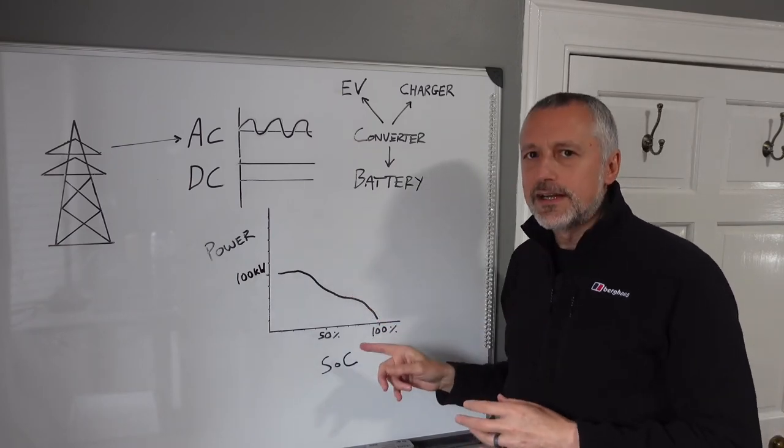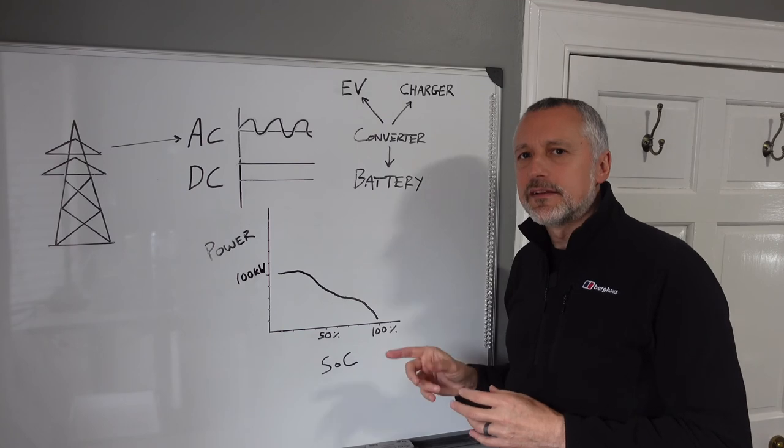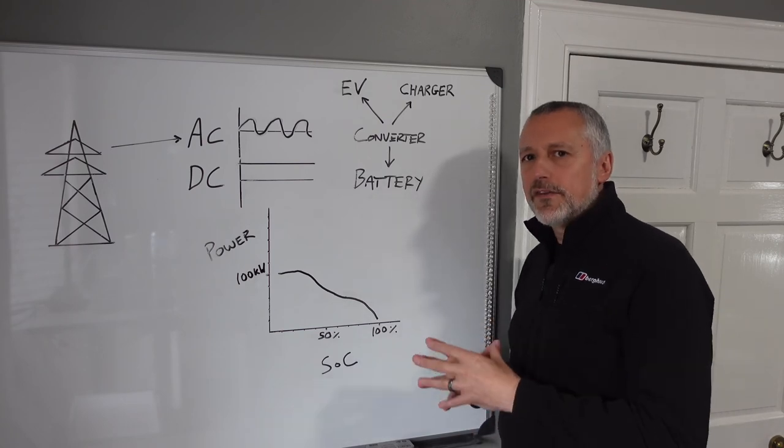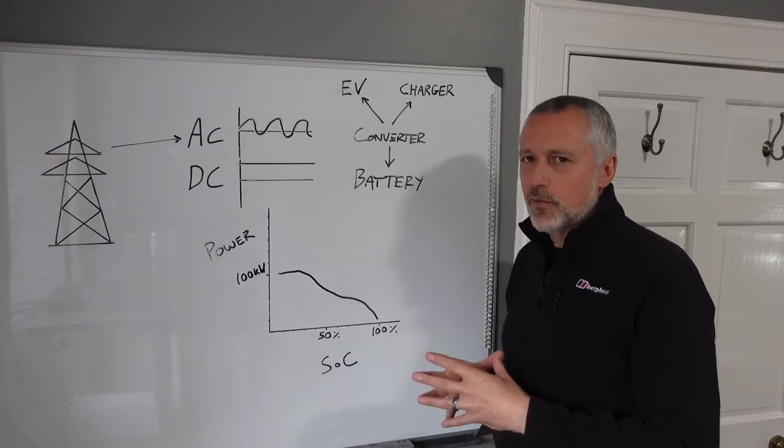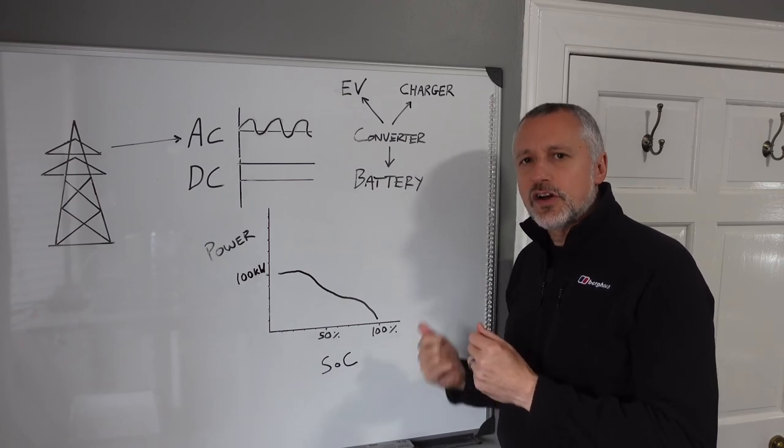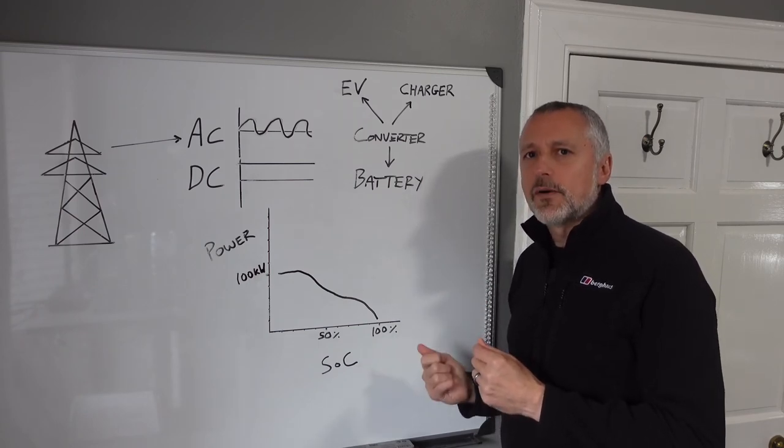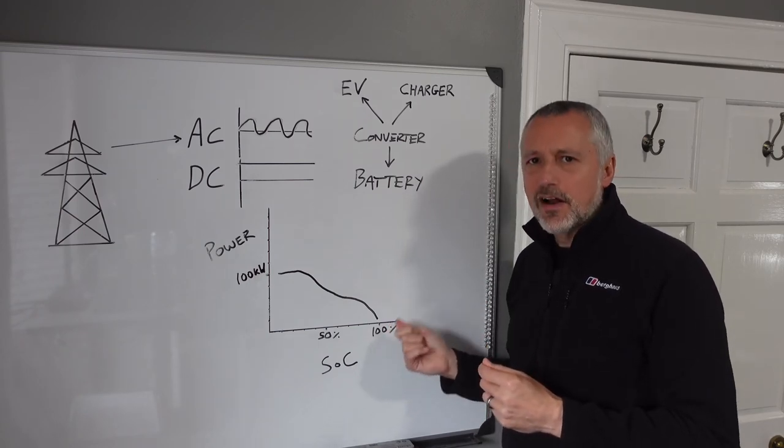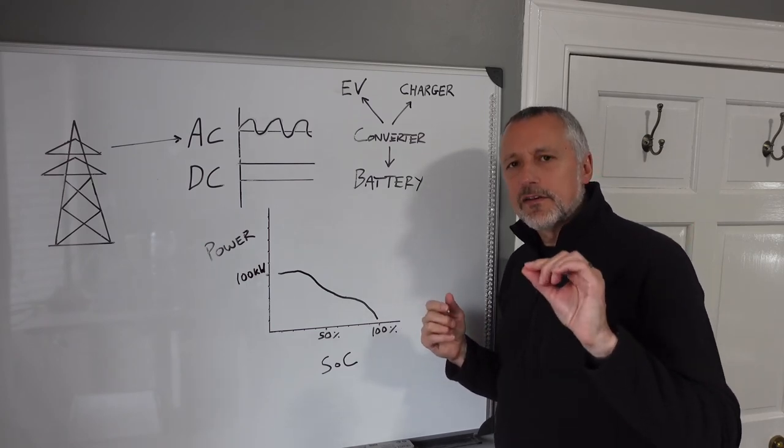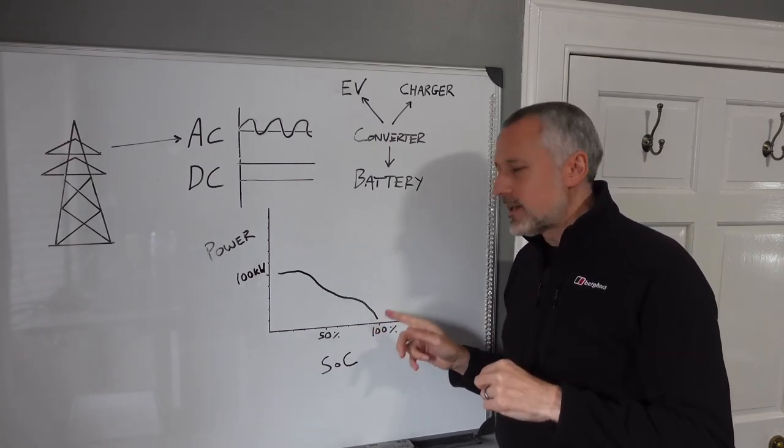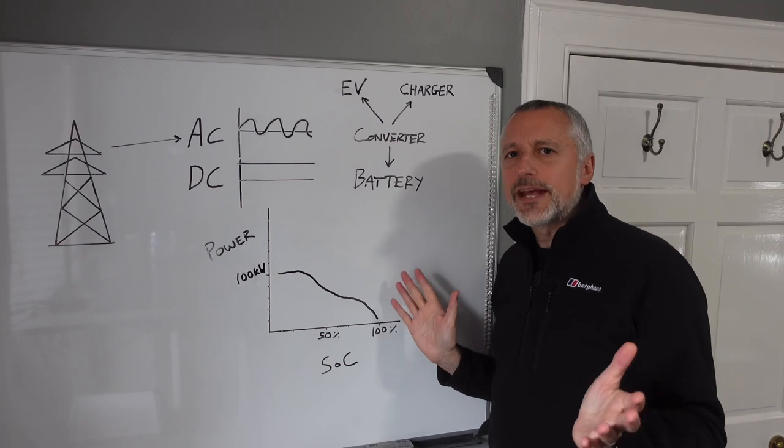Now what's important to know is when you get to 80% and you're getting below 50 kilowatts, then the charging speed is getting much slower, and it ends up when you get to 100%, as you saw with the glass, you really have to slow down, then you get sort of 10 kilowatt speeds.